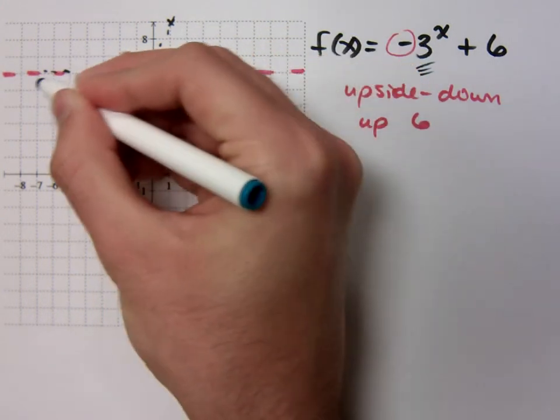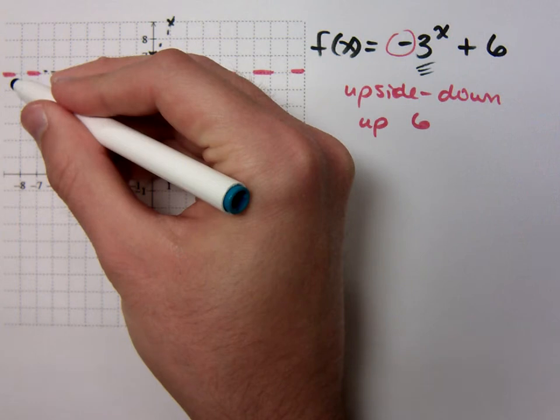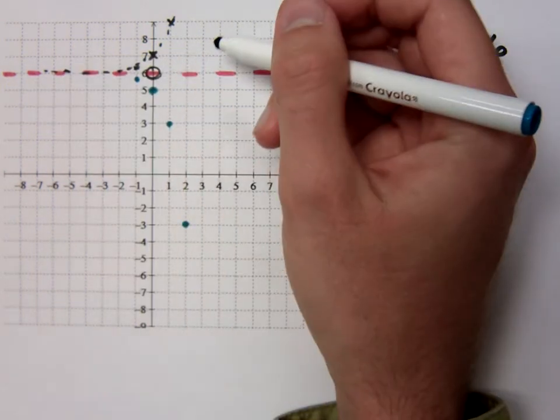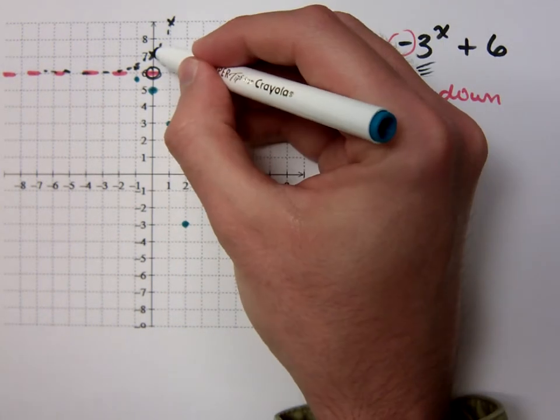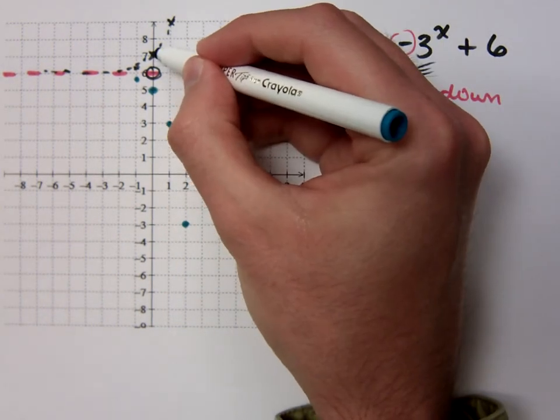But if I go to the left, it would be dividing by 3. So I start with my basic point, which is going to be the one that matches up with the 0, 1. So this would have been my 0, 1 up here, after I shifted it up 6.